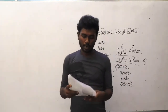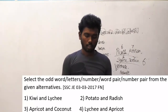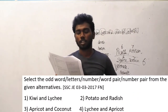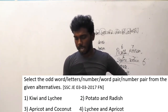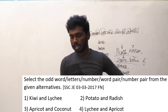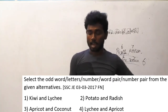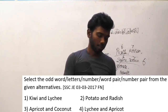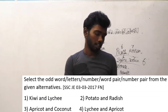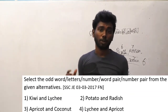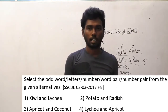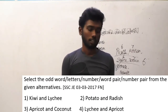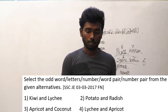Question 46 from SSCJE: select the odd word pair. Options are kiwi/litchi, potato/radish, apricot/coconut, litchi/apricot. All options except potato and radish are types of fruit. Potato and radish are vegetables. So the odd pair is potato and radish, option B.